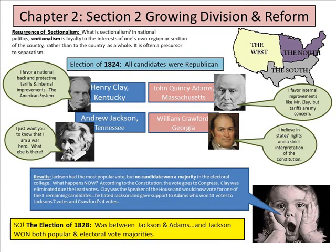The election of 1824: all candidates were Republican. Henry Clay of Kentucky, John Quincy Adams of Massachusetts — yes, his dad was John Adams — William Crawford of Georgia, and Andrew Jackson of Tennessee. Jackson had the most popular votes, but no candidate won the majority in the Electoral College. According to the Constitution, the vote goes to Congress. Clay was eliminated due to the fewest votes. As Speaker of the House, Clay hated Jackson and gave his support to Adams, who won 13 votes to Jackson's 7 and Crawford's 4. The winner was John Quincy Adams.